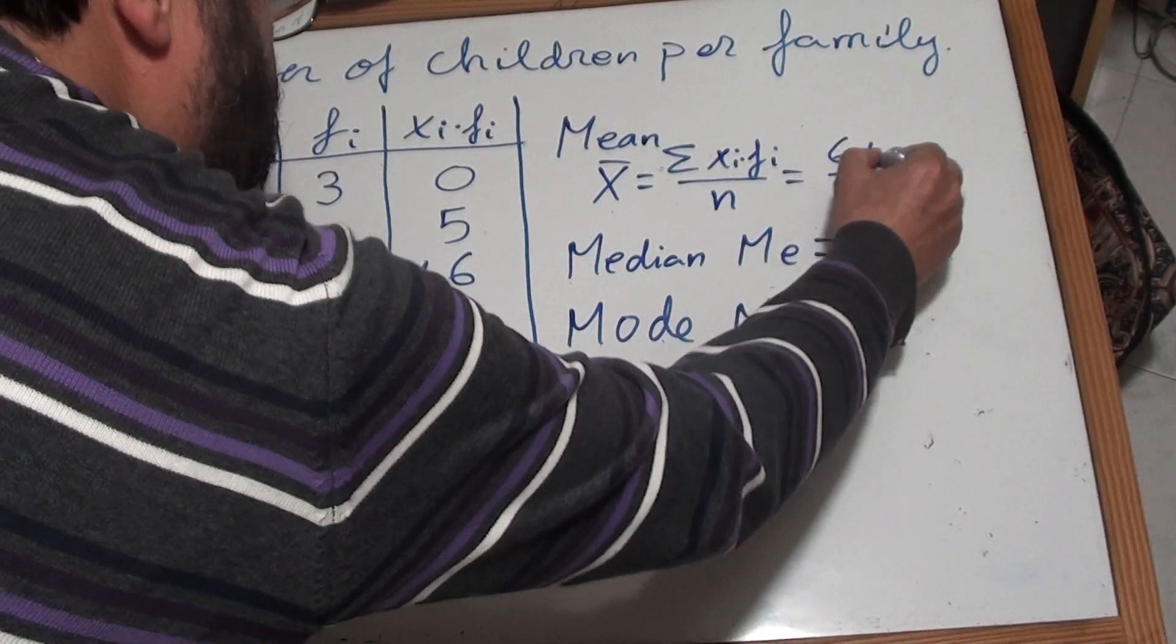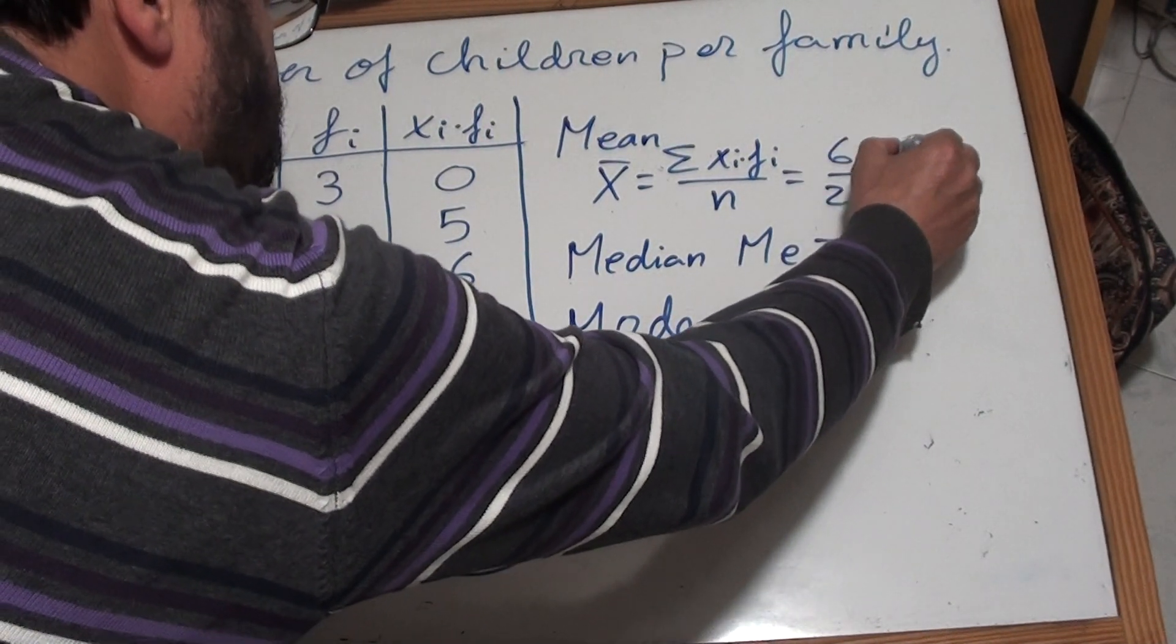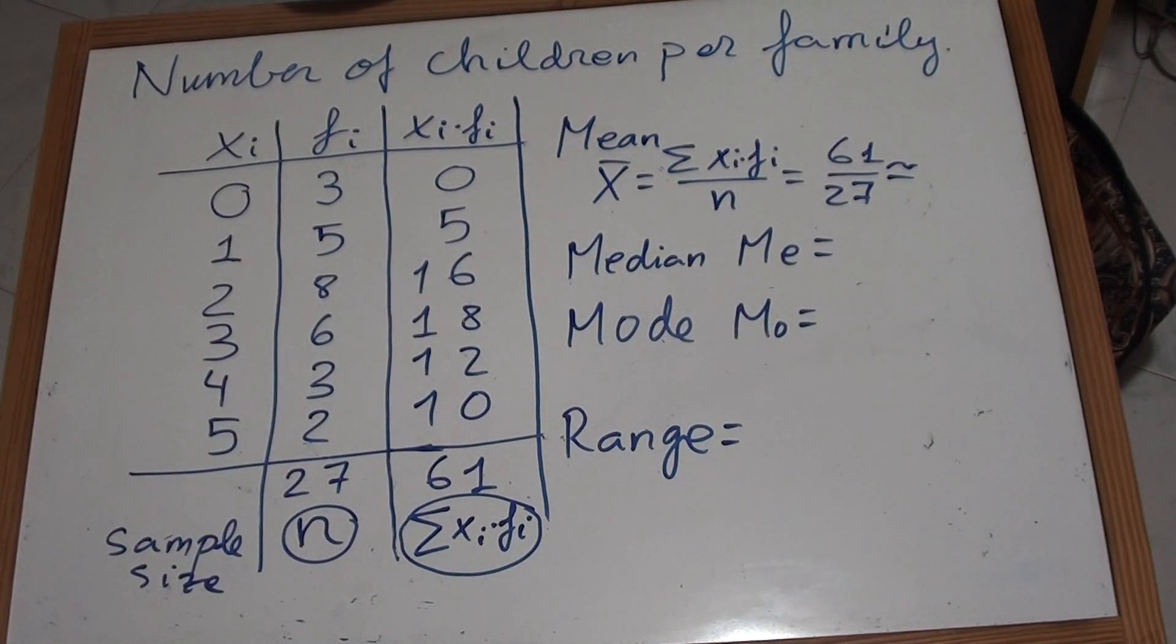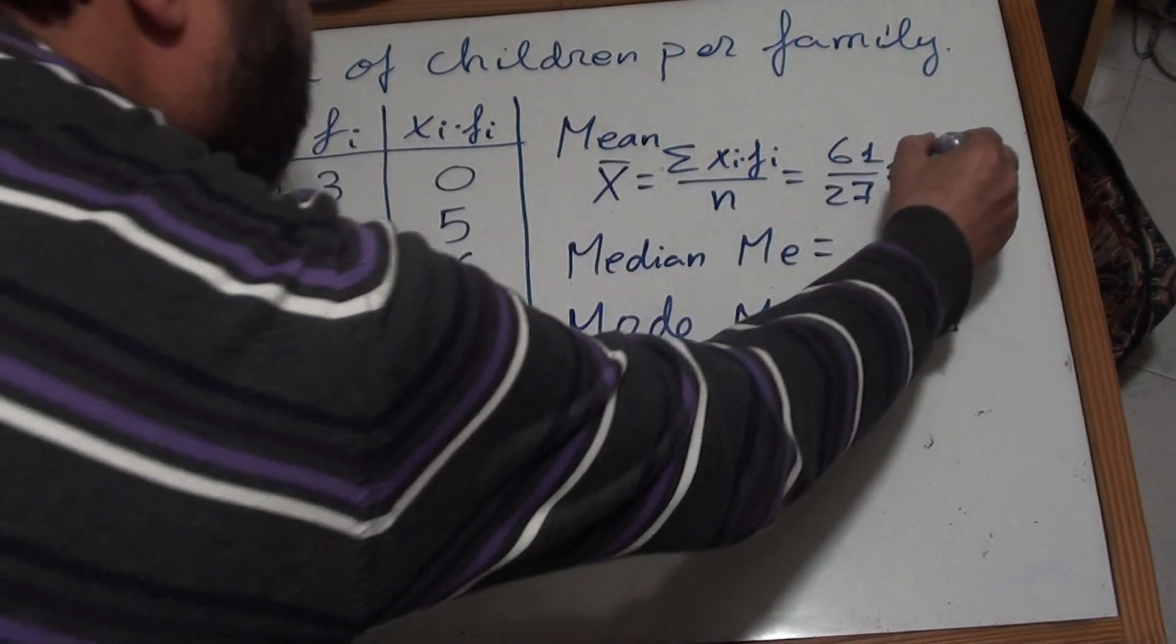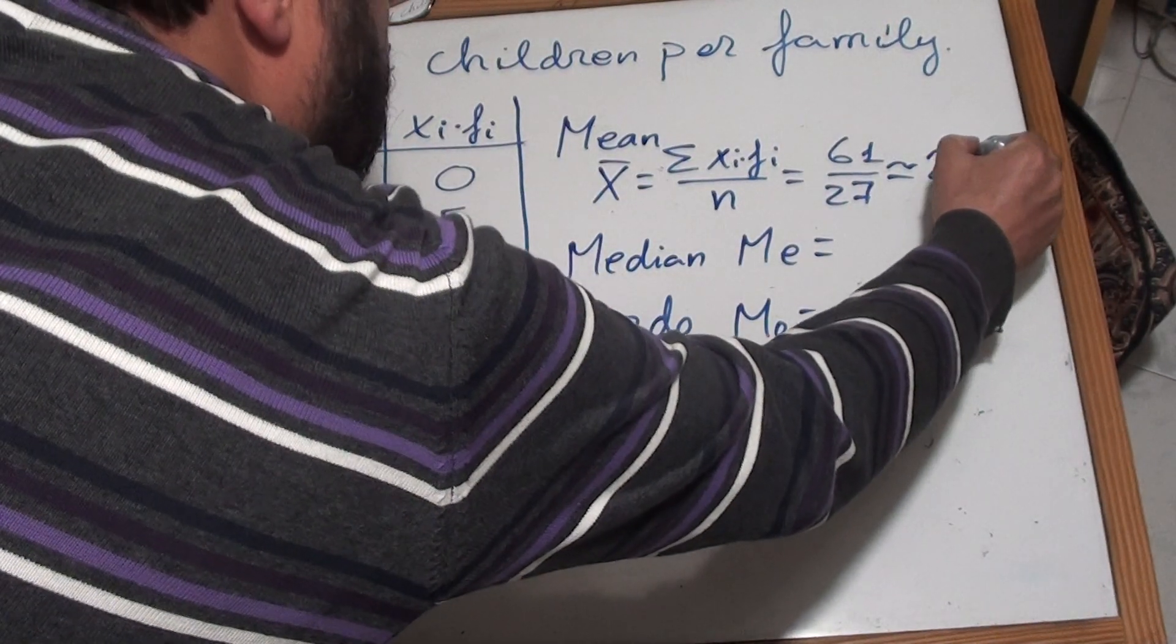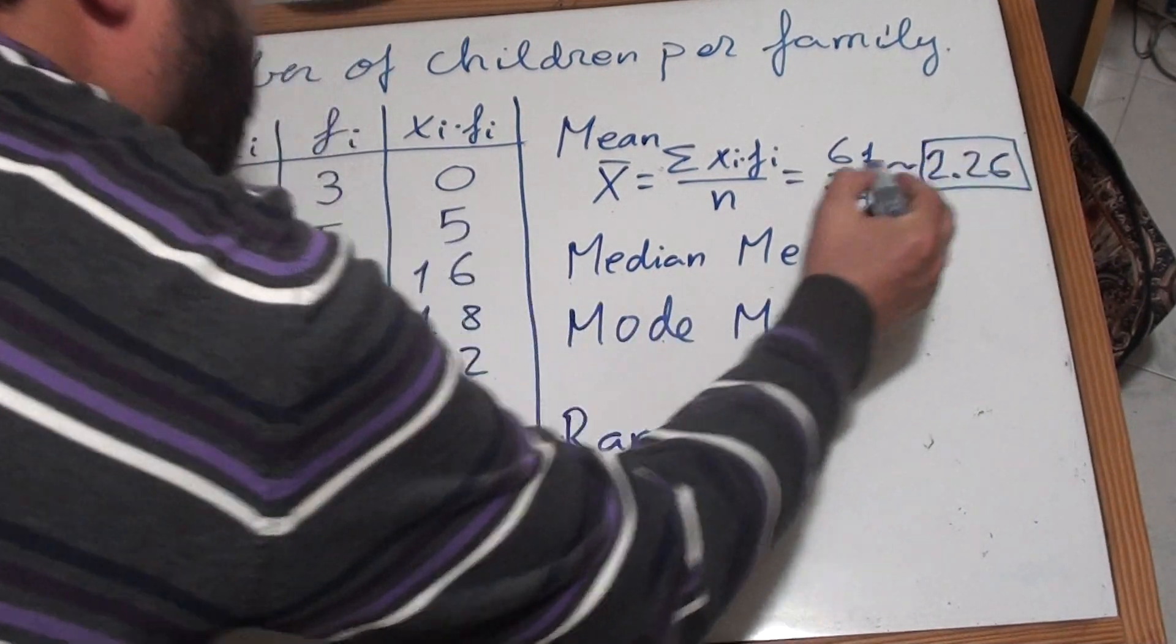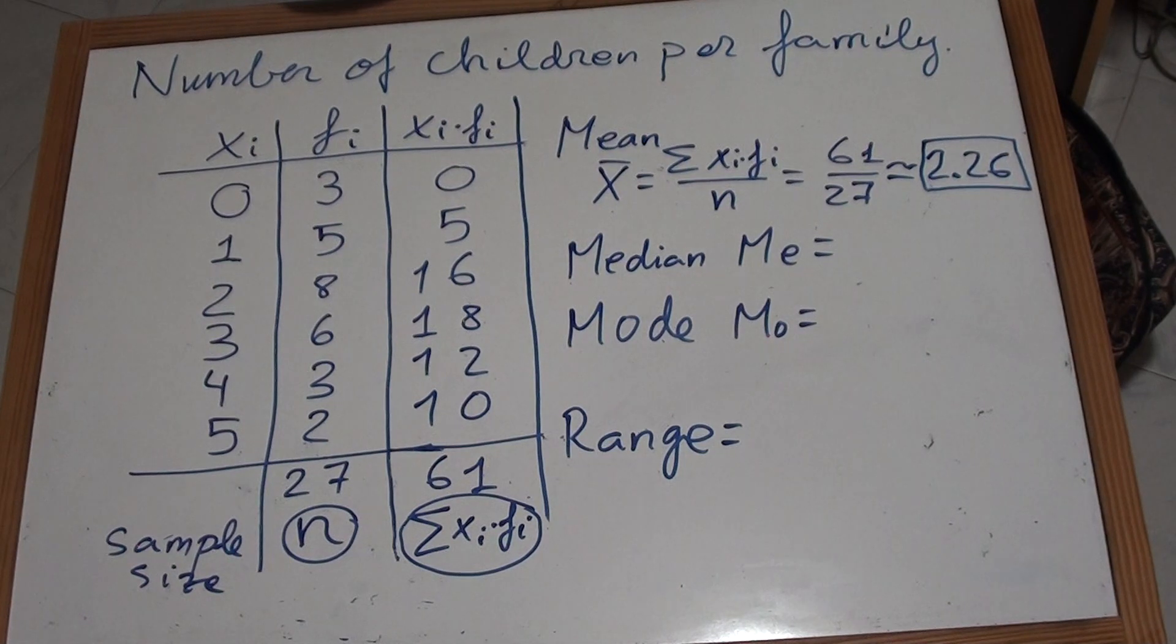61 divided by 27, which is approximately 2.26. That's the average number of children per family. Of course, it doesn't make sense having 2.26 children per family, but that's an average. As an average, it does make sense. It doesn't make sense as data, but it makes sense as an average.